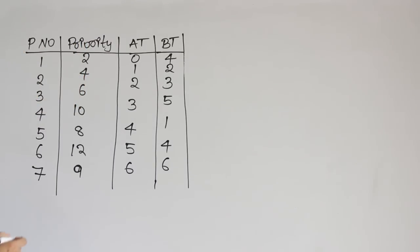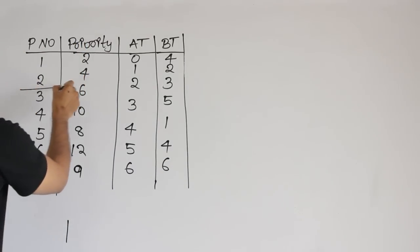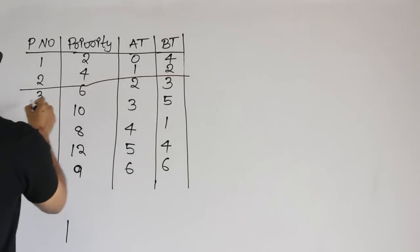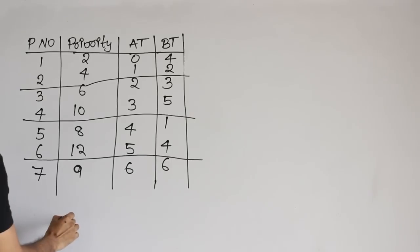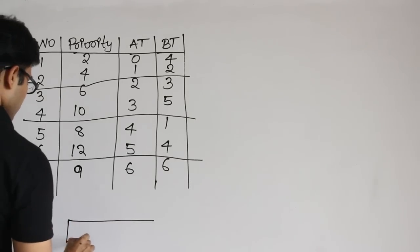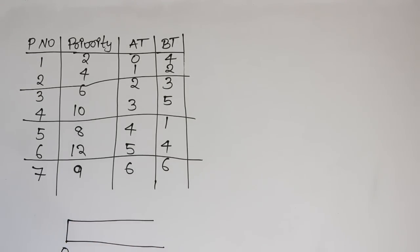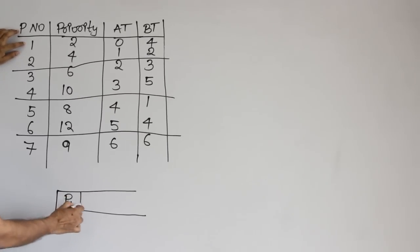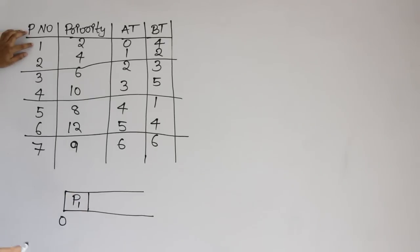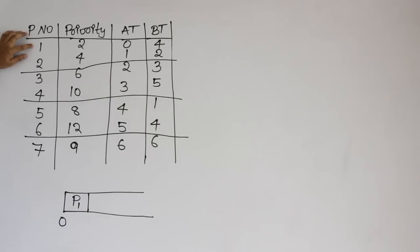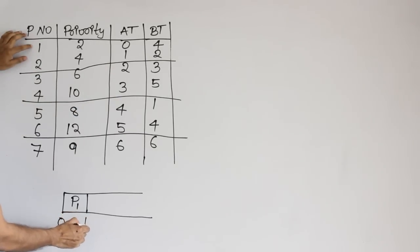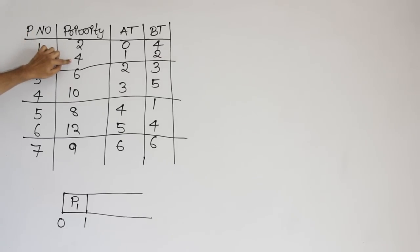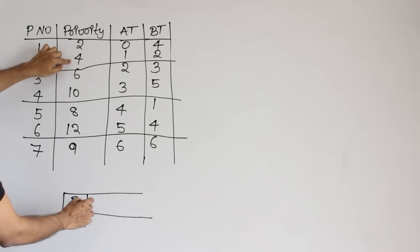So here you should be careful. At time 0, the first process available is P1 — I have no other choice. Therefore I am going to run it till what point? You should see what is the arrival time of the next one. Next one's arrival time is 1, so you can run P1 only till 1, because the next one arriving is having higher priority. Therefore you preempt P1 and put the next one.